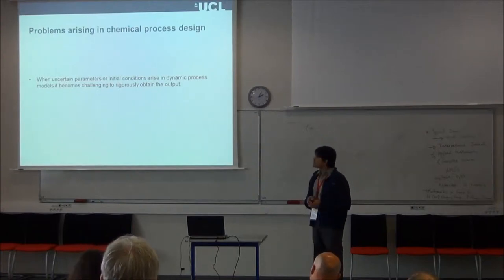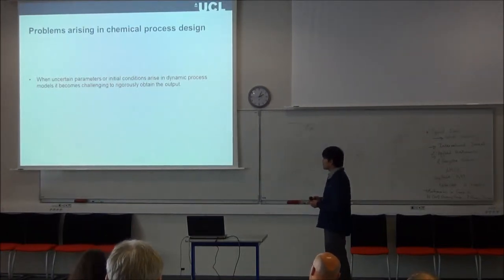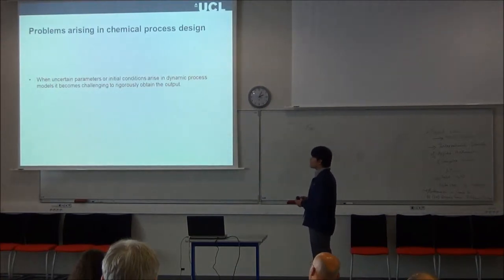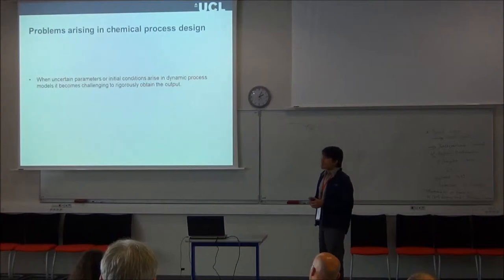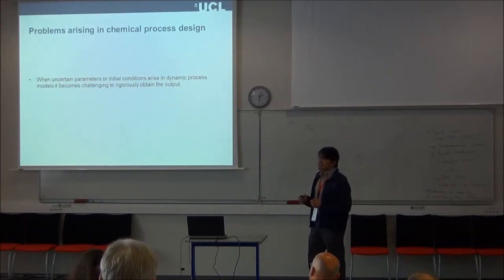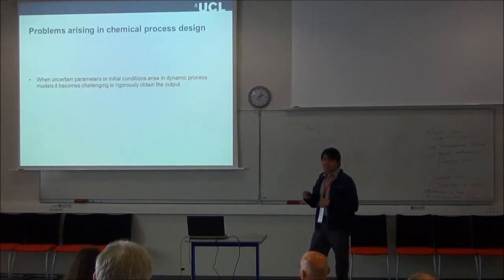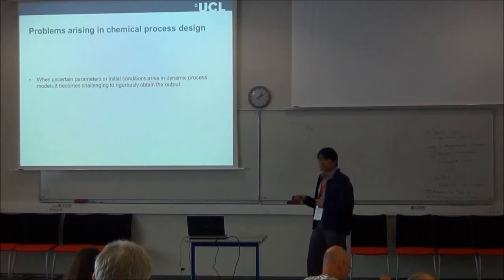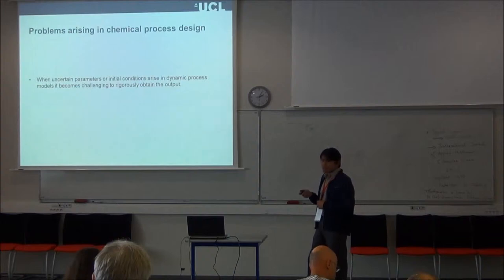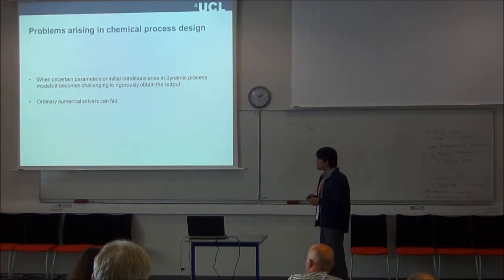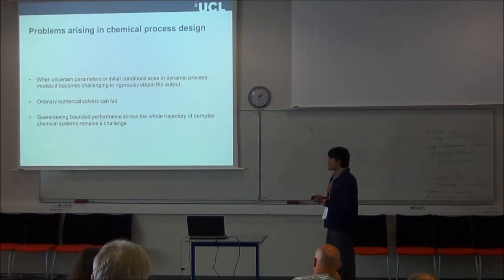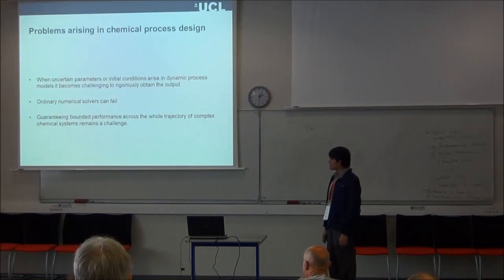So we have been working with this process right now. When certain parameters or initial conditions are uncertain in chemical processes, chemical process models can become challenging to model the output. We are especially interested in this because we want to fulfill certain safety constraints that the process must meet. So we are interested in bounds that are never crossed so that the process is safe. For our case, ordinary numerical solvers can fail for all purposes, and warranting bound performance across the whole trajectory of complex chemical systems remains a challenge.